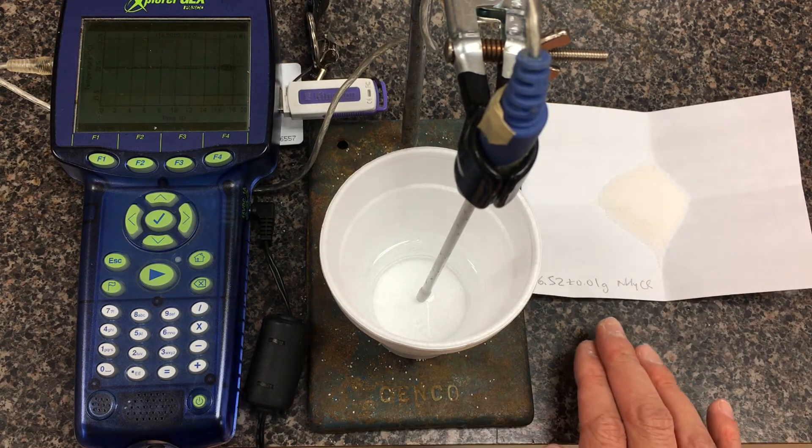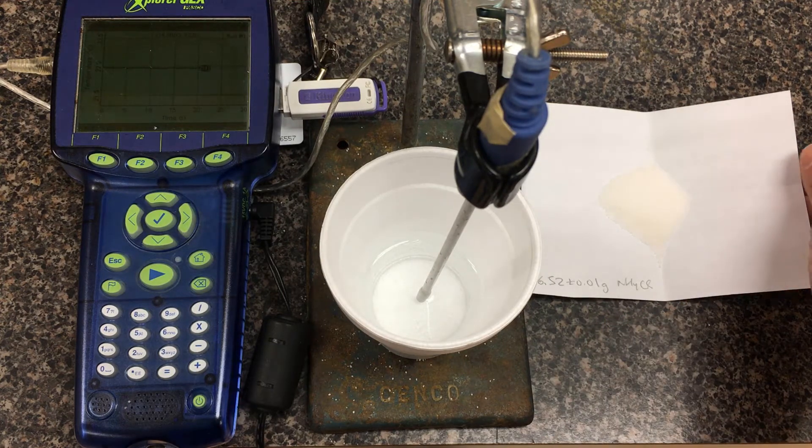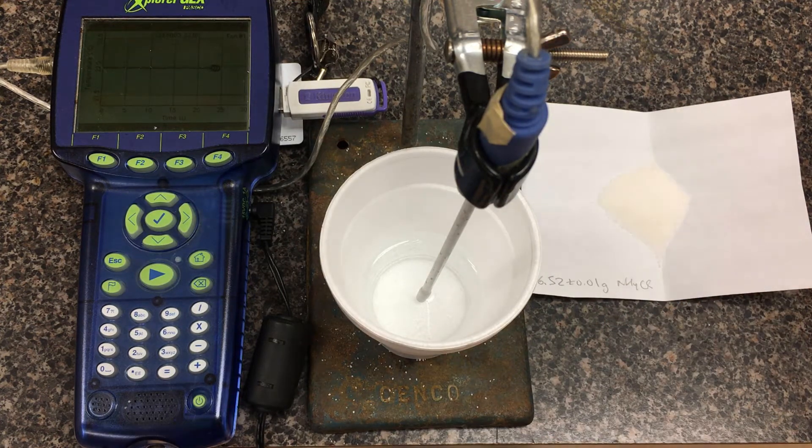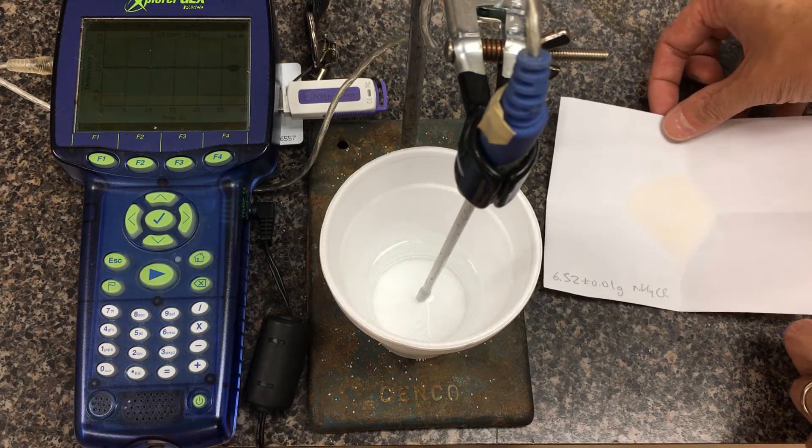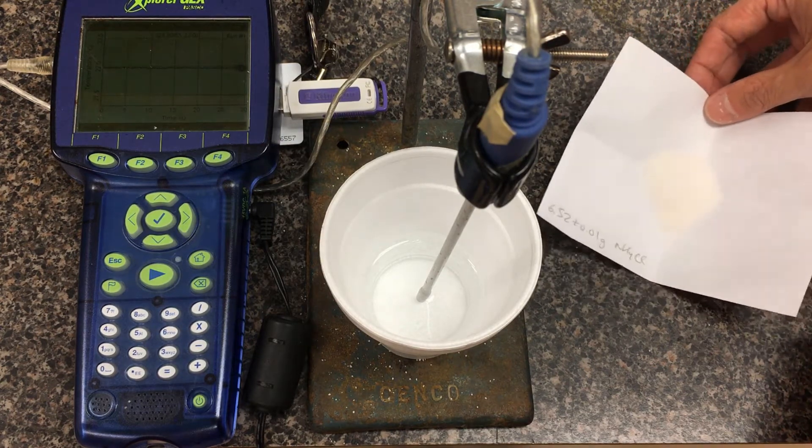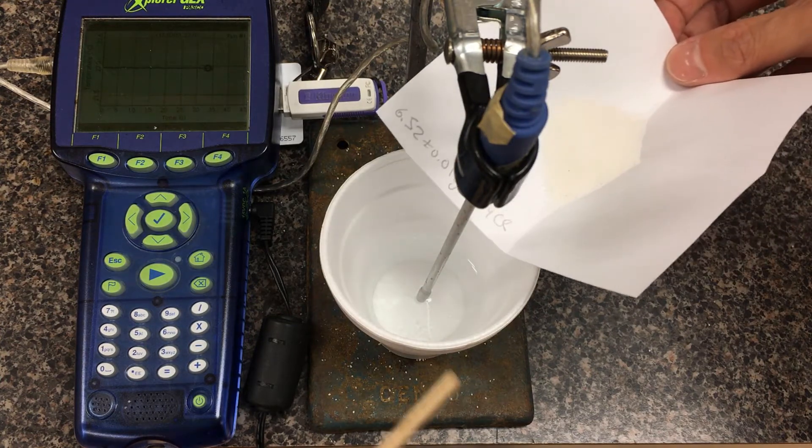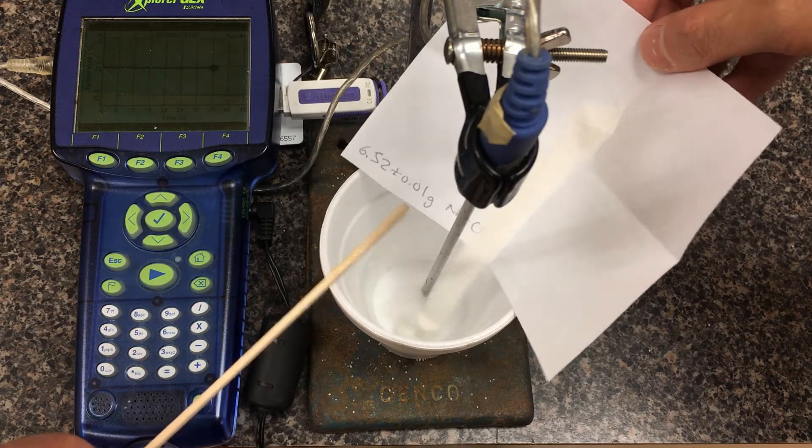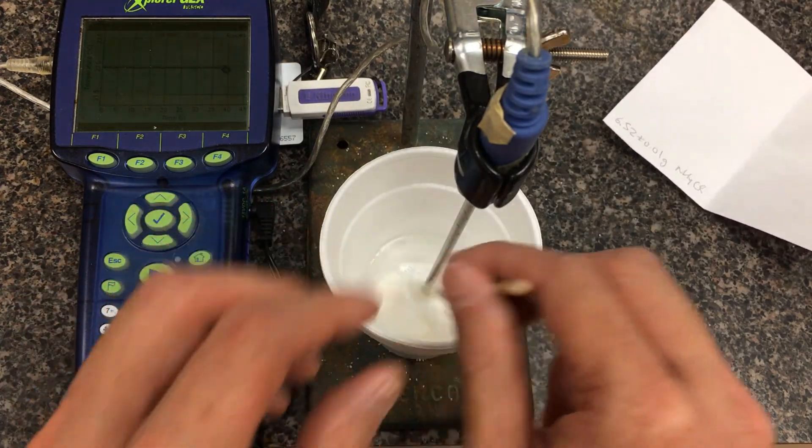I've weighed out 6.52 plus or minus 0.01 grams of ammonium chloride. I'm going to slowly drop in this powder. We have a wooden stir stick ready to help with the dissolving, and we'll be monitoring on the GLX sensor in real time what happens to this temperature. Let's just slide it in.